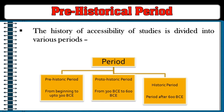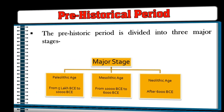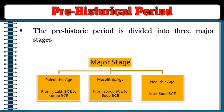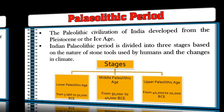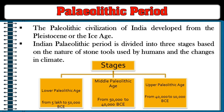The prehistoric period spans from the beginning up to 300 BC; the proto-historic period from 300 BC to 600 BC; and the historic period after 600 BC. The prehistoric period is divided into three major stages: the Paleolithic Age (50,000 BCE to 10,000 BCE), the Mesolithic Age (10,000 BCE to 6,000 BCE), and the Neolithic Age (after 6,000 BCE).